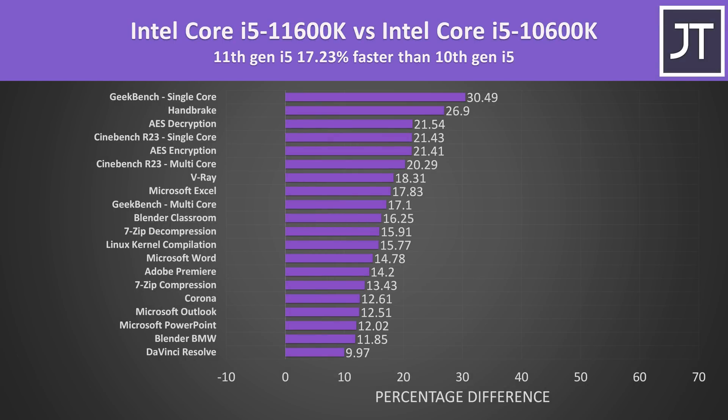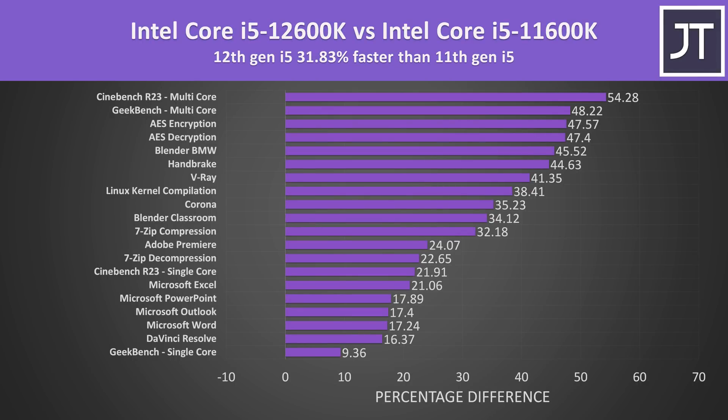The jump with 11th gen was about 17% ahead of 10th gen in these specific applications. While generally not much of a difference, the single threaded tests did see fairly reasonable gains with 11th gen. 12th gen is where the biggest generational difference is — the i5-12600K was nearly 32% ahead of the i5-11600K, the biggest overall difference when comparing each generation to the one that came after it.